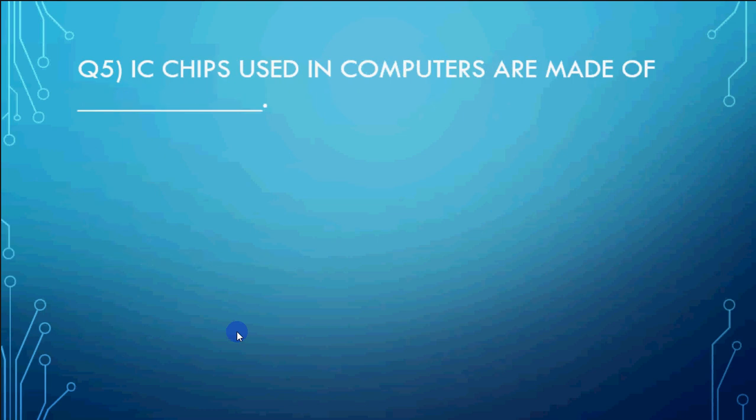IC chips - IC means integrated circuits which you have in the computer which are basically used to create your motherboard and other circuits as well. Are made up of what? Silicon, chromium, lead or silver. So answer is silicon. So silicon chips.